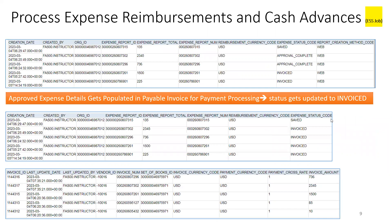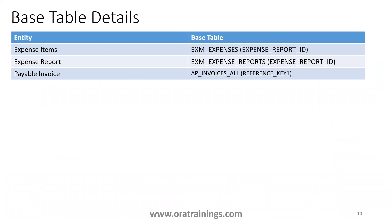When the expense is created and the manager approves, you can see the list of statuses in the expense table. The initial status is 'saved.' If the invoice is pending approval, it will be 'pending approval.' If the approval is complete, it will be 'approval complete.' If an AP invoice is generated for your expense, the status will be 'invoice.' The linkage between the expense tables and the AP invoice is via the expense report ID. In the AP invoice all table, there is no direct expense report ID column, but the value is stored in reference_key_1 in the AP invoice table — this is how you link the expense table with the AP invoice table.